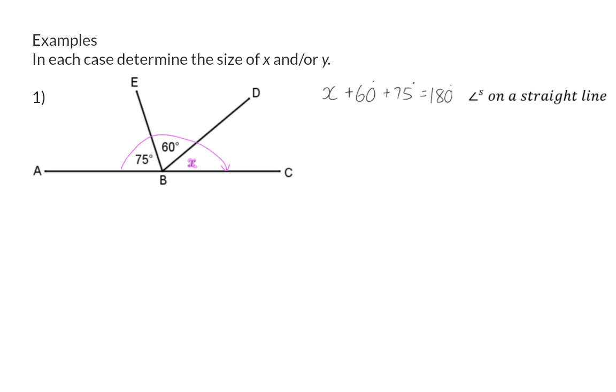Remember that you need to supply a reason like this for every statement you make. Now, we can solve X by taking the 180 degrees, subtracting the 60 degrees, as well as the 75 degrees. Whatever is left will be the value for X, so X is 45 degrees.